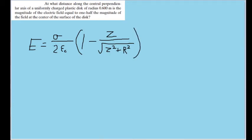Now, the problem mentions the magnitude of the field at the center of the surface of the disc. Let's call it e sub c. At the center of the disc, z is just going to be equal to 0, because there is no distance at all between the center of the disc and the point we're analyzing. So if z is zero,